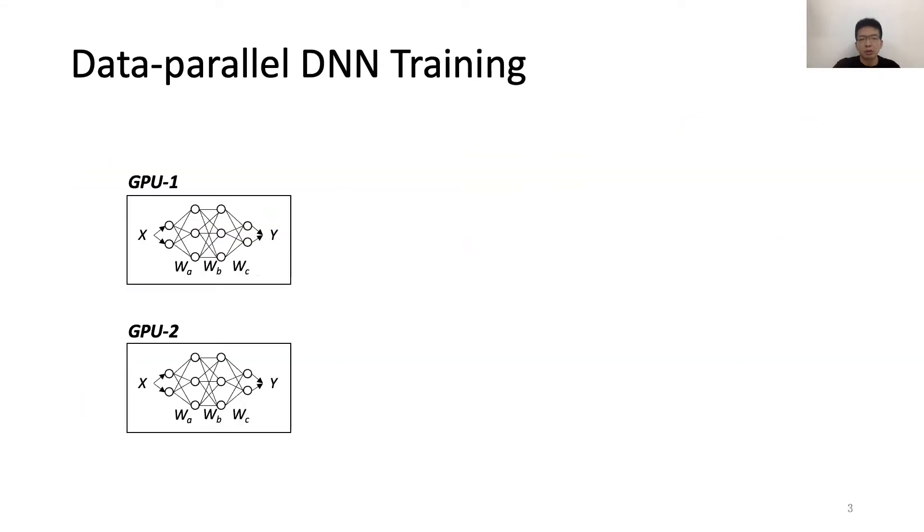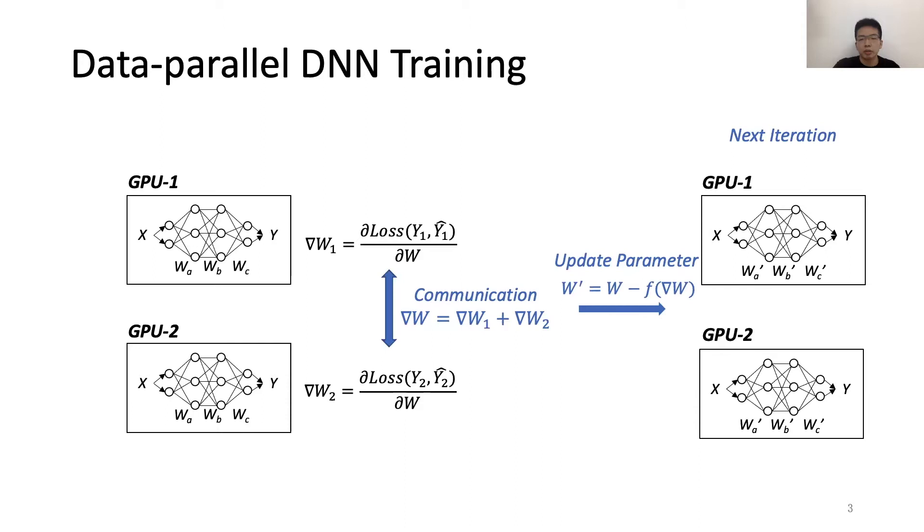A common way for distributed training is called data parallelism, which means that each GPU carries a complete model and loads different data to train. Here is an example using two GPUs for data parallelism. First, each GPU takes different input data and goes through the forward propagation to get the output. Then in the back propagation, they calculate the loss function and propagate the gradients from the last layer to the first layer. After that, each GPU communicates with others to aggregate the gradients and use the new gradients to update their parameters, and then go to the next iteration to repeat these processes.